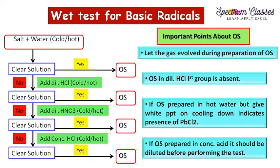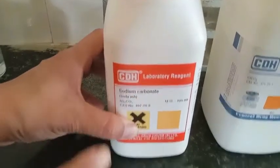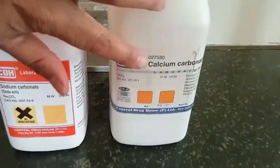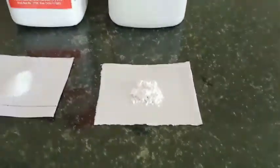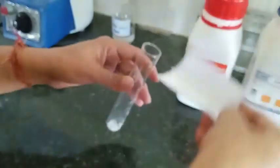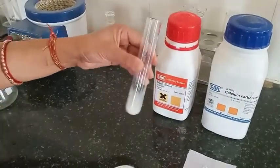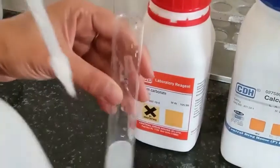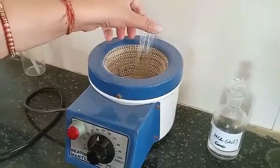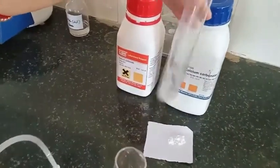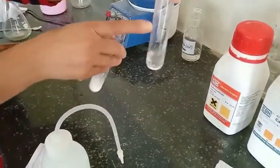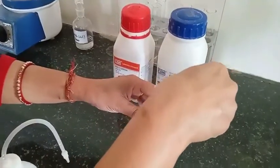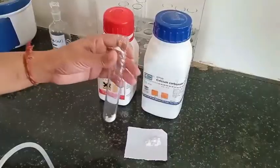Let's start with the lab activity to prepare the original solution. I am preparing the original solution for two salts: sodium carbonate and calcium carbonate. I have taken sodium carbonate and added cold water to it. It shows that we are not getting a clear solution in cold water, so I am going to heat this. You can see sodium carbonate is almost clear in hot water, so we can use it as the original solution.